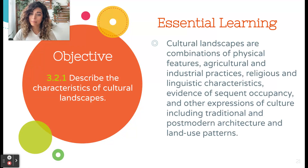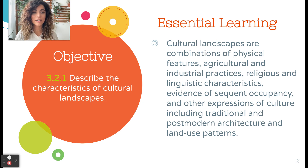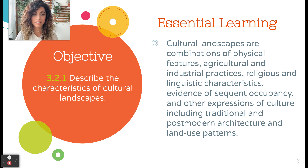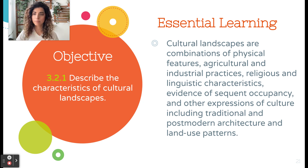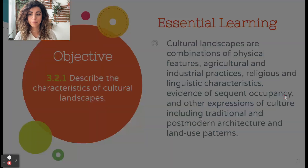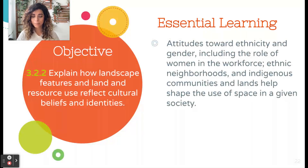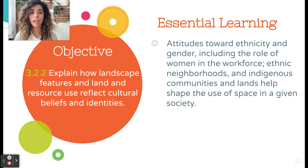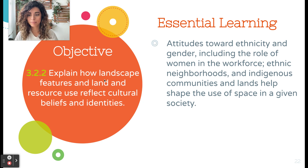To recap: make sure you can describe the characteristics of cultural landscapes, including physical features, agricultural and industrial practices, religious and linguistic characteristics, sequent occupancy, and attitudes toward ethnicity and gender as reflected in cultural landscapes — including ethnic neighborhoods and indigenous communities.